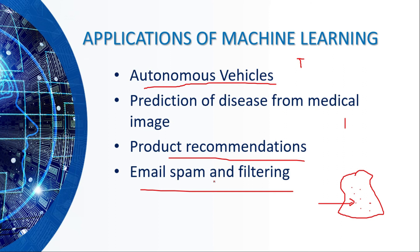The fourth application is email spam filtering. Gmail uses machine learning to separate genuine mails from spam — authorized mails go to the inbox, while unauthorized mails go to the spam folder. There are many more applications of machine learning, and in upcoming lectures we will do detailed projects and learn what exactly the other algorithms of machine learning are. That's it for this session — thank you for joining.